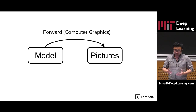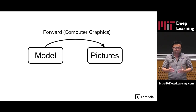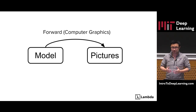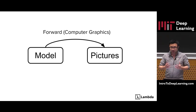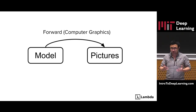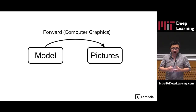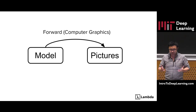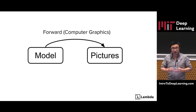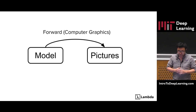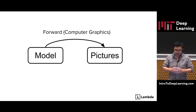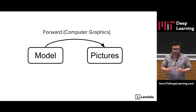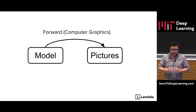The forward rendering computes an image from some 3D scene parameters, such as the shape of an object, the color of an object, the surface material, and the light source. Forward rendering has been one of the major focuses of computer graphics for many years.